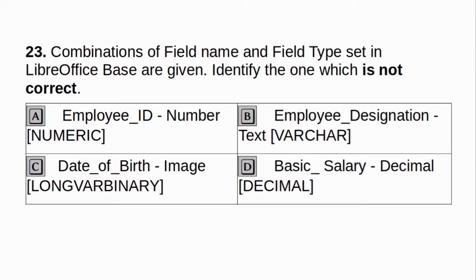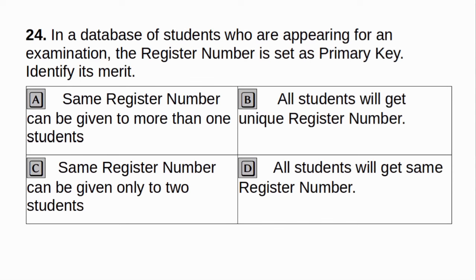Combinations of field name and field type set in LibreOffice Base are given. Identify the one which is not correct. A. Employee ID - Number Numeric. B. Employee designation - Text Varchar. C. Date of birth - Image Long Binary. D. Basic salary - Decimal. Answer: C. Date of birth - Image Long Binary. In a database of students appearing for an examination, the digital number is set as primary key. Identify its merit. Answer: B. All students will get unique digital number.